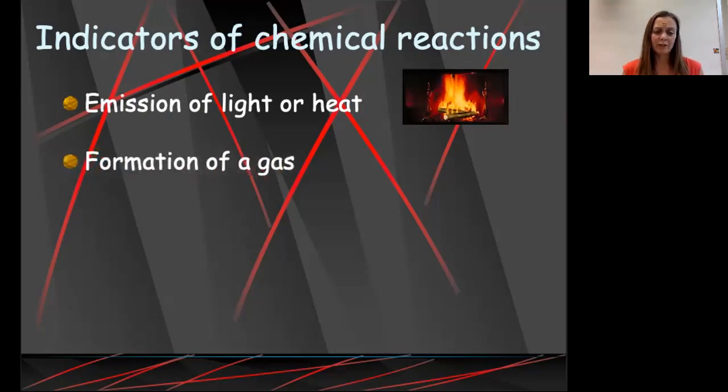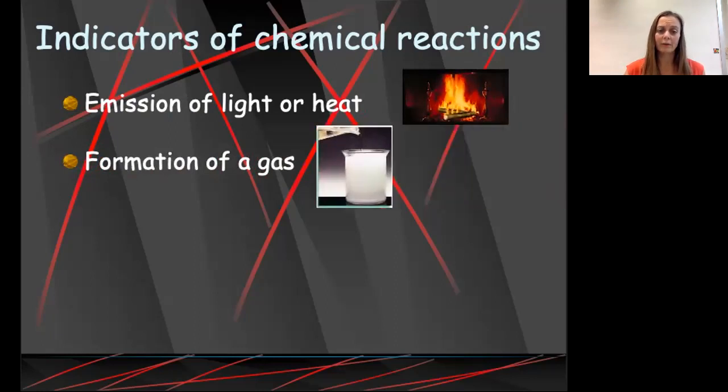We can also talk about the formation of a gas as an indicator of a chemical reaction. Just like when we put the aluminum wire into the hydrochloric acid and we saw the formation of gas bubbles on the wire. When we have the formation of a gas, that's an indicator of a chemical reaction. Very often when we see formation of a gas, we'll see it in the form of bubbles.